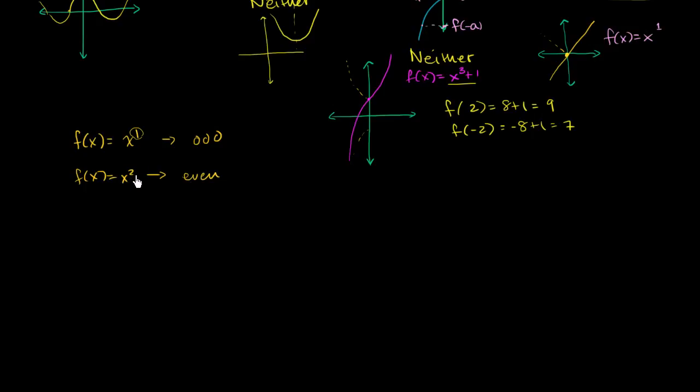And it kind of gels with the idea that we're raising it to an even power. I could keep going if it was x to the third. That is odd. I could keep going. If we're raising it to any, if we just have, let me write it this way. In general, if you have f of x is equal to x to the n, then this is an odd function if n is odd, is an odd number. And this is an even function if n is even.